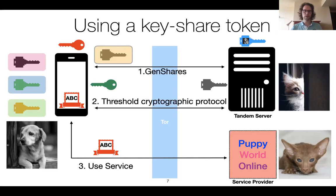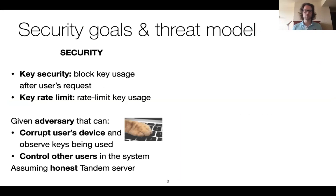Before going further, let's make concrete which properties we want. We would like to run threshold cryptographic protocols with a central server while maintaining the following security properties. We want key security: upon request of the user, any usage of the shared key can be stopped. Additionally, because it might not be immediately clear when a user's device has been compromised, we want the central server to be able to enforce rate limiting so keys cannot be used too often even if the user doesn't know. This must work against an adversary that can actively corrupt the user's device and monitor anything on it — so solutions that reconstruct user secrets in memory on a device don't work well.